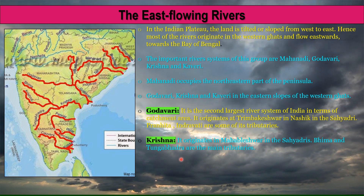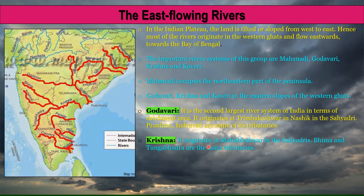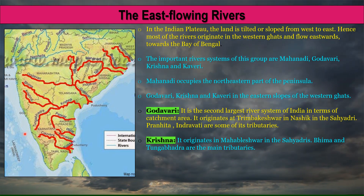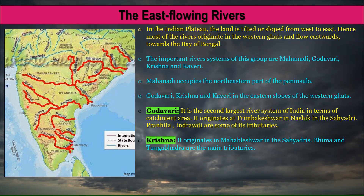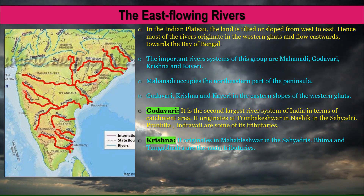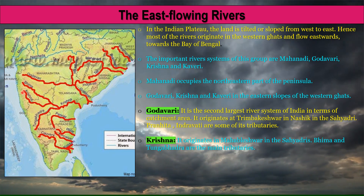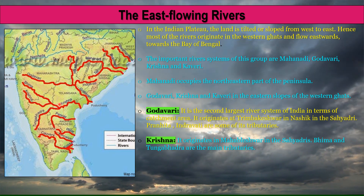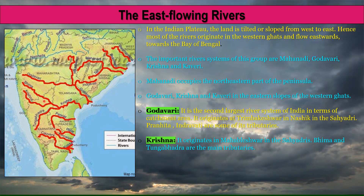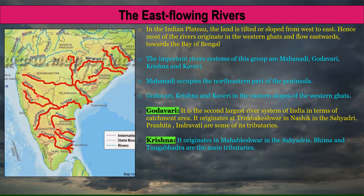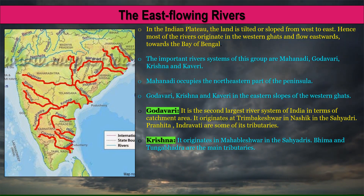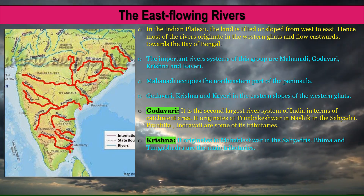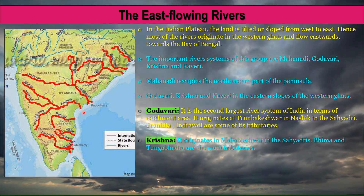The Krishna River originates in Mahabaleshwar in the Sayadris and flows eastwards into the Bay of Bengal. Its major tributaries are river Bhima and Tungabhadra.